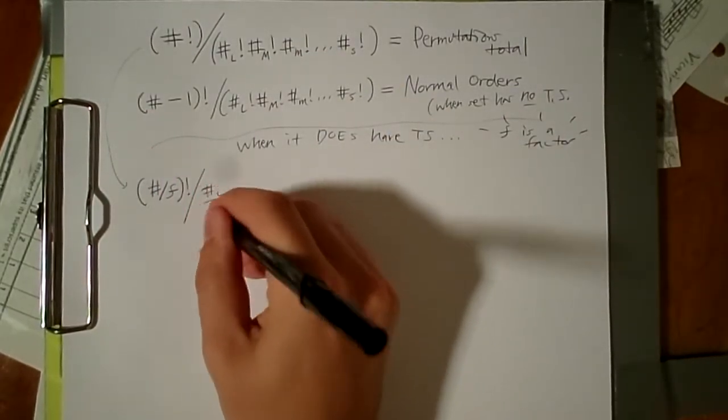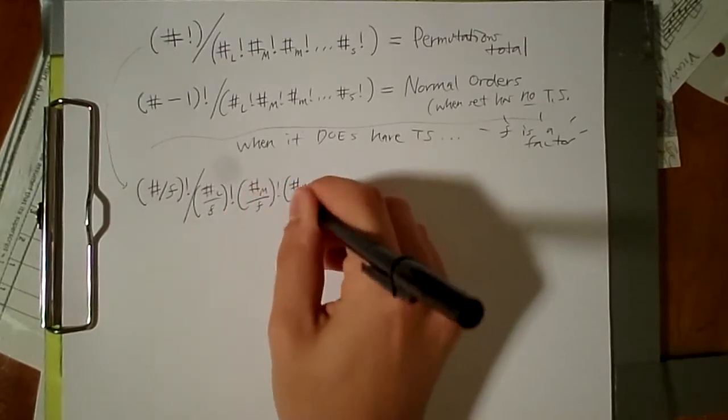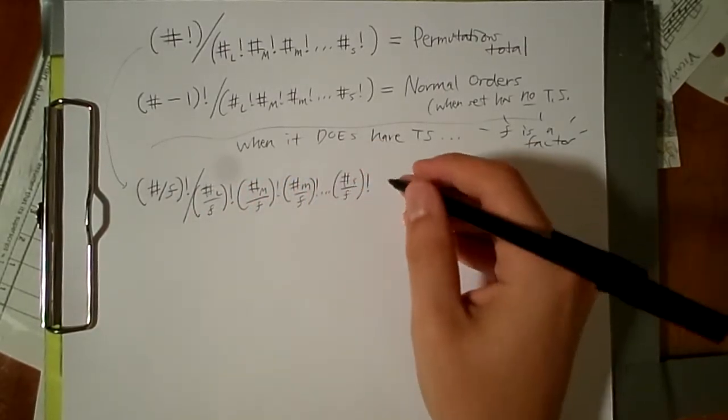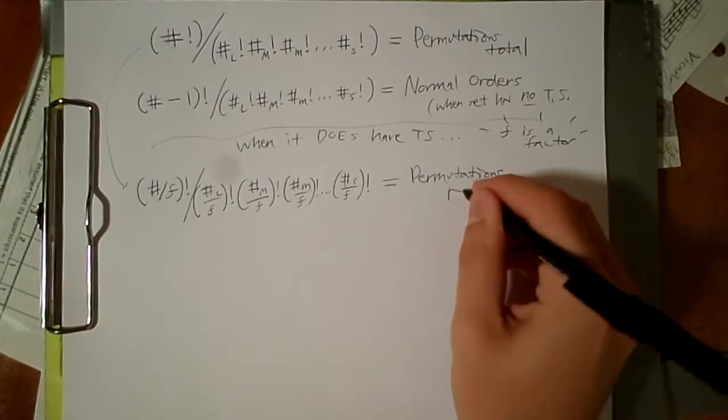However, when we have a set with a common factor between all its coefficients, then we had to do a little subtraction before dividing by the total number of tones.